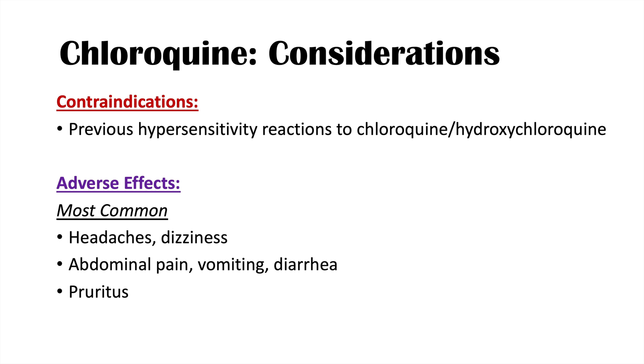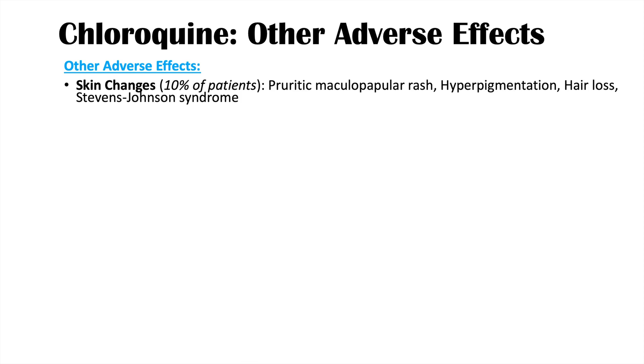There are a variety of other adverse effects that can affect multiple systems in the body — these are more rare. Skin changes that occur more often include a pruritic maculopapular rash. We can also see hyperpigmentation, where areas of the body become darkened, hair loss, and rarely Stevens-Johnson syndrome.